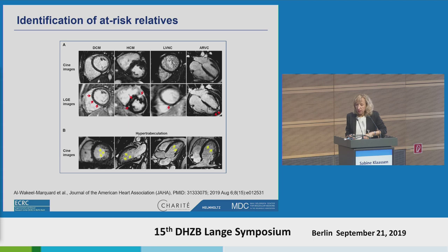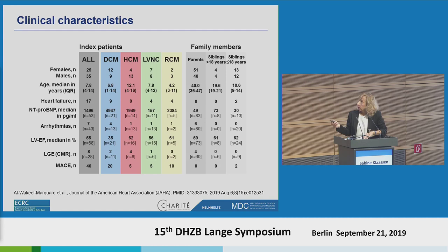For identification of at-risk relatives, CMRs from typical cardiomyopathies are shown here. Interestingly, most family members had exactly the same subtype of cardiomyopathy as the index patient. In these 30 family members with suspected cardiomyopathy, two thirds of them had hypertrabeculation. We identified this as an obvious risk factor in families — indicating presence or future development of cardiomyopathy.